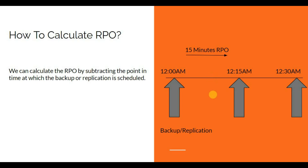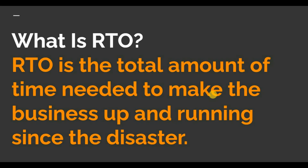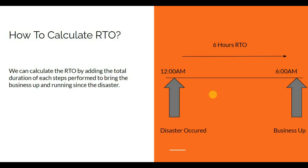Now for RTO — RTO is the total amount of time needed to make the business up and running since the disaster. For example, if a disaster occurs and the primary location is gone, you will have to bring the business up from the secondary location. Whatever amount of time is taken to complete all the steps to make the business up and running is called RTO. For example, if a disaster occurs at 12:00 AM and after six hours you are able to make the business up and running, that six hours is the RTO.